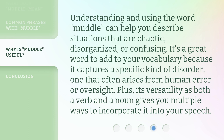Understanding and using the word muddle can help you describe situations that are chaotic, disorganized, or confusing. It's a great word to add to your vocabulary because it captures a specific kind of disorder, one that often arises from human error or oversight. Plus, its versatility as both a verb and a noun gives you multiple ways to incorporate it into your speech.